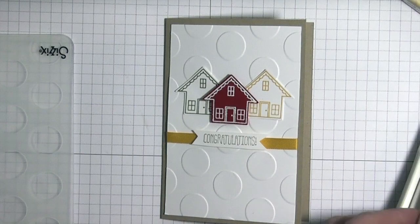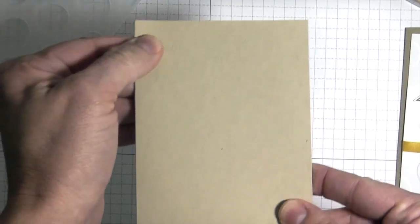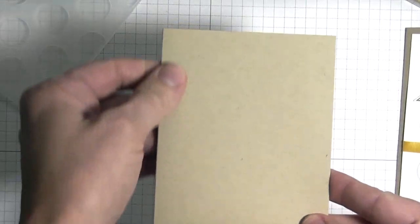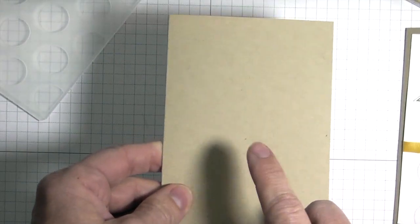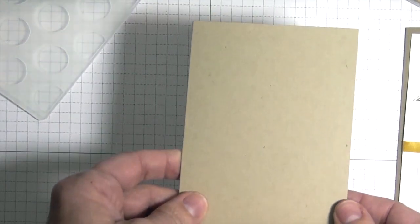The first thing I did is I made my card base. This measures seven by five, and I scored it at three and a half, so that makes it a note card size. If you wanted to do a matching envelope, you would just take your Crumb Cake cardstock and use the envelope punch board.